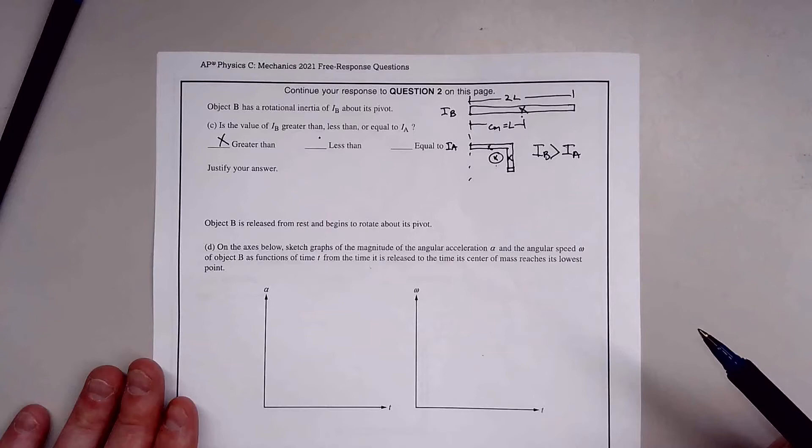You need to write that I_A's mass is closer to the pivot point P. You can write point P if you want to. Another way you can justify it is this has more mass out here and it'll slow that down. Think about a figure skater with her arms out. As she pulls them in, she'll spin faster. So that makes sense.